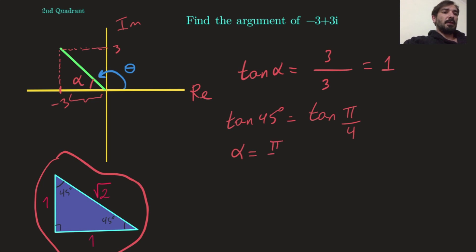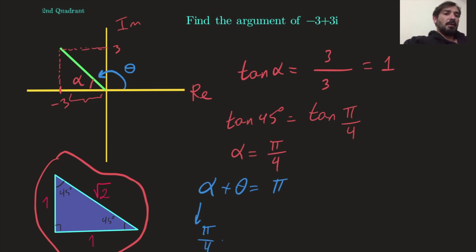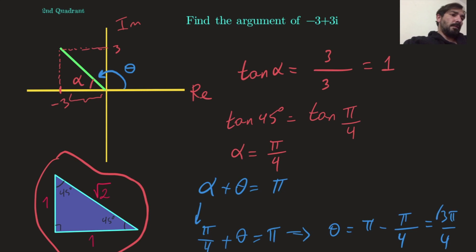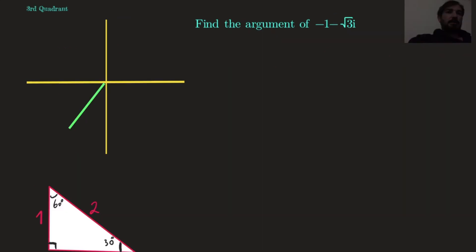So alpha equals π/4. We also know that alpha plus theta should equal 180°, or π, because this is a straight line. So π/4 plus theta equals π, which gives theta equals π minus π/4, which is 3π/4. Therefore the argument of -3 + 3i is 3π/4.